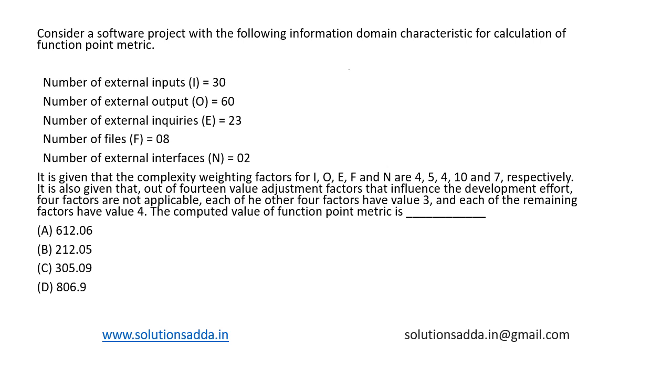This is a question from Software Engineering. Consider a software project with the following information domain characteristic for calculation of function point metric. Number of external input is 30, external output is 60, external inquiry is 23, number of files are 8, and external interfaces is 2.